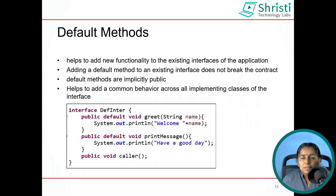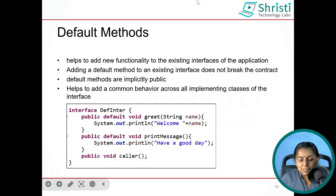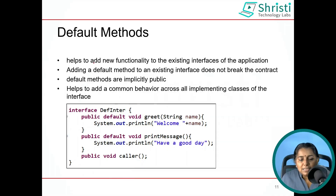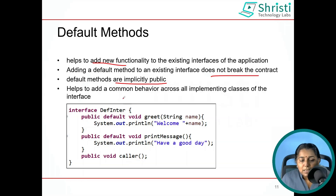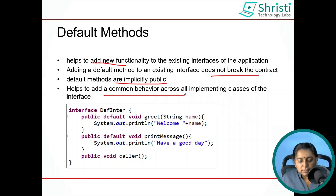Now let us see an example of a default method first, and then move on to static methods. Default methods are used for adding new functionality without breaking the contract. The default methods are implicitly public and help to add common behavior.